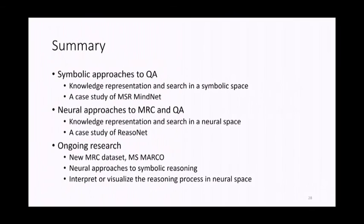To summarize: symbolic QA approaches haven't worked well. Now we're trying neural approaches to QA, which are doing much better. MS MARCO is our contribution. Ongoing research includes how to get neural models to do reasoning — getting some of the nice things from symbolic reasoning — and how to interpret and understand these models. We're very excited about all the datasets out there.